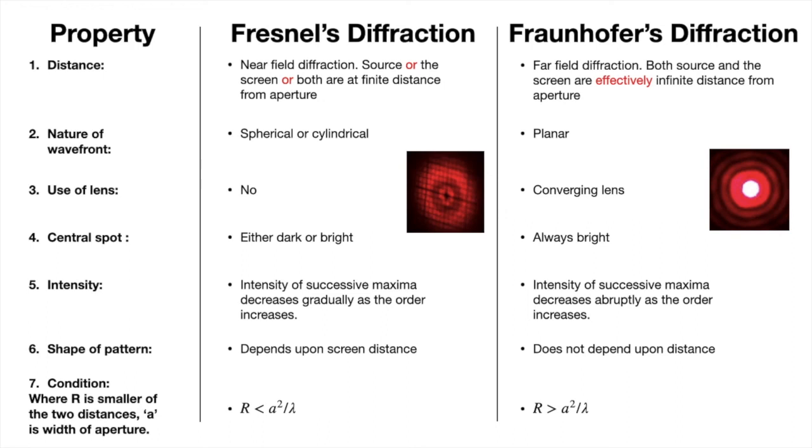If that R is less than A squared by lambda, it is Fresnel's class. If it is greater than A squared by lambda, then it is Fraunhofer's class. So in this lecture, we discussed diffraction and its types. In the next lecture, we will be discussing more about Fresnel's class of diffraction. So that's it for this video. Thanks for watching.